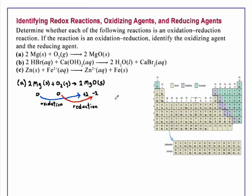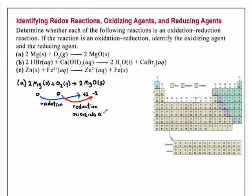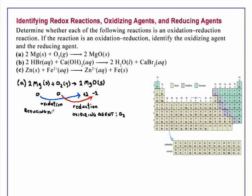Whatever species undergoes reduction is the oxidizing agent — that makes O₂ the oxidizing agent. And the species undergoing oxidation is the reducing agent, so the reducing agent is magnesium.